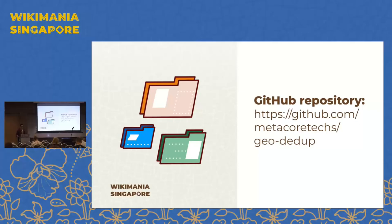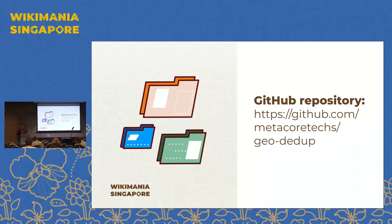Here's the GitHub repository I mentioned — GitHub MetaCortex, spelled in a very strange way, slash geoddupe. It's a little bit technical. I'll be showing lots of queries and techniques using the API, but I'll be putting everything on there. If you're interested — particularly if you want to apply these techniques for your own country or any data in Wikipedia and Wikidata — you can get it on there and feel free to fork, adapt, or contribute anything you want.